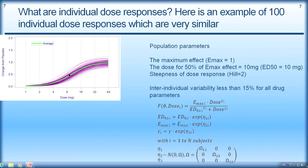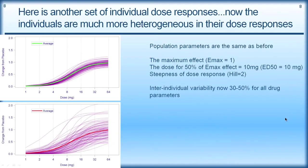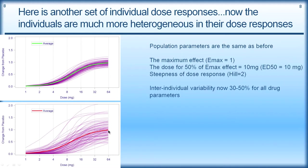Also shown in green is the average of these curves — if we observe these individuals at each dose, we can estimate the average effect across individuals. Here is another set of 100 individual dose responses, but now the curves look very different. There is much greater heterogeneity in the dose responses, using the same population parameters but now with individual variability of 30 to 50% for each drug parameter. We can still estimate the average effect across the dose range at a particular dose.